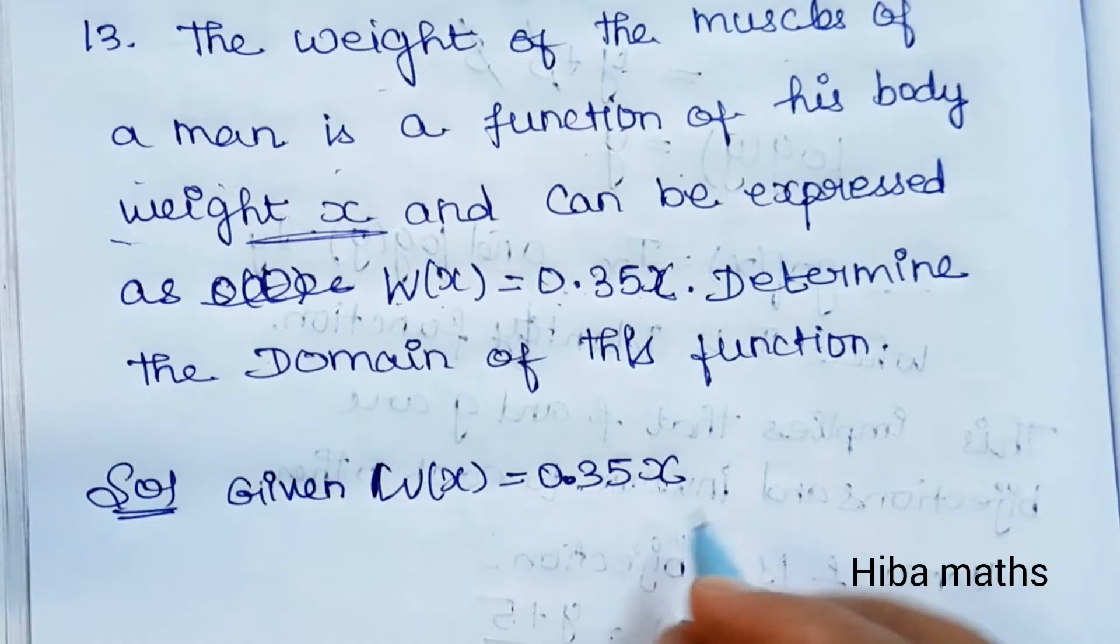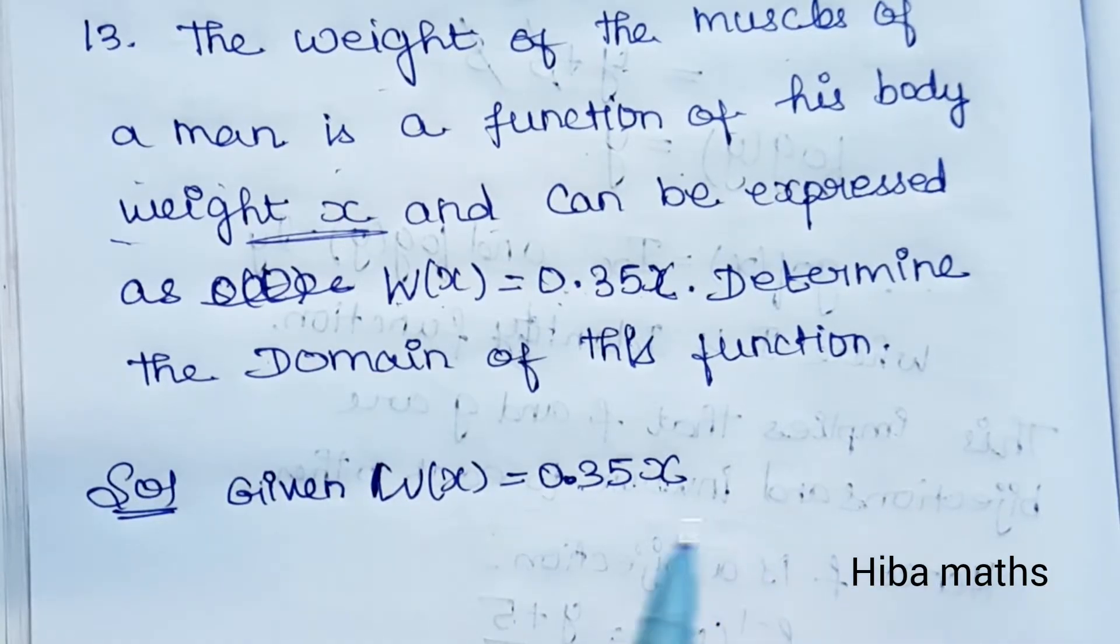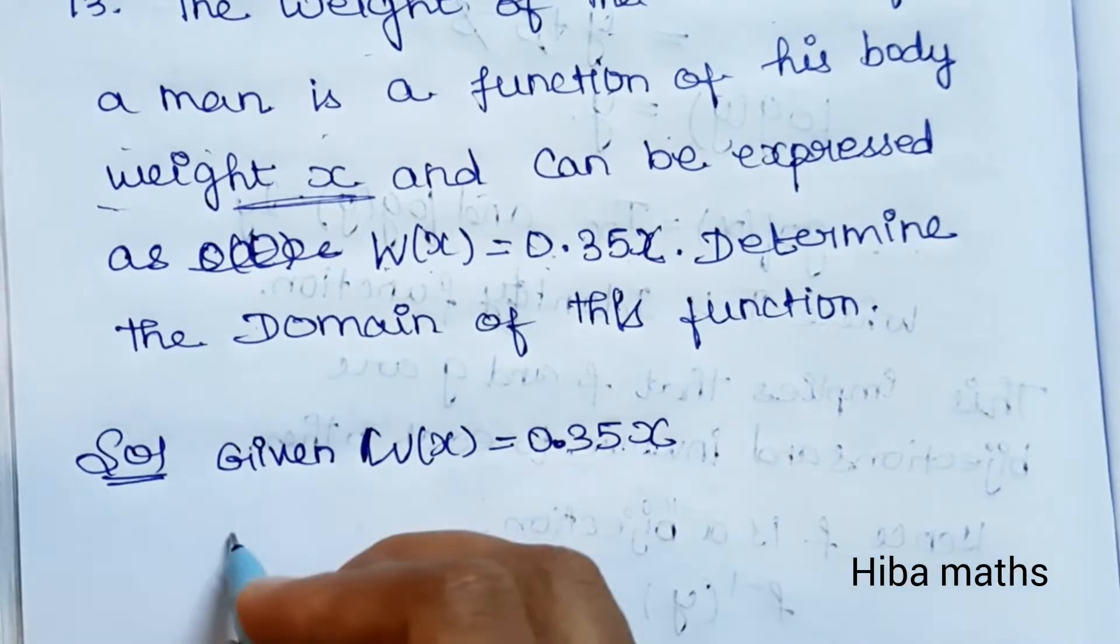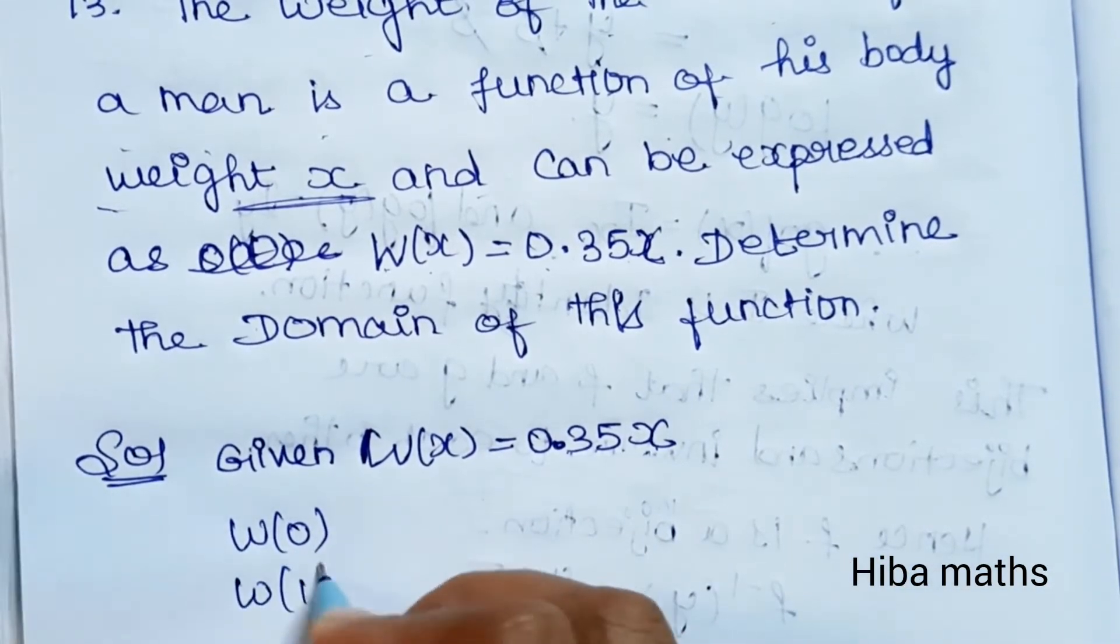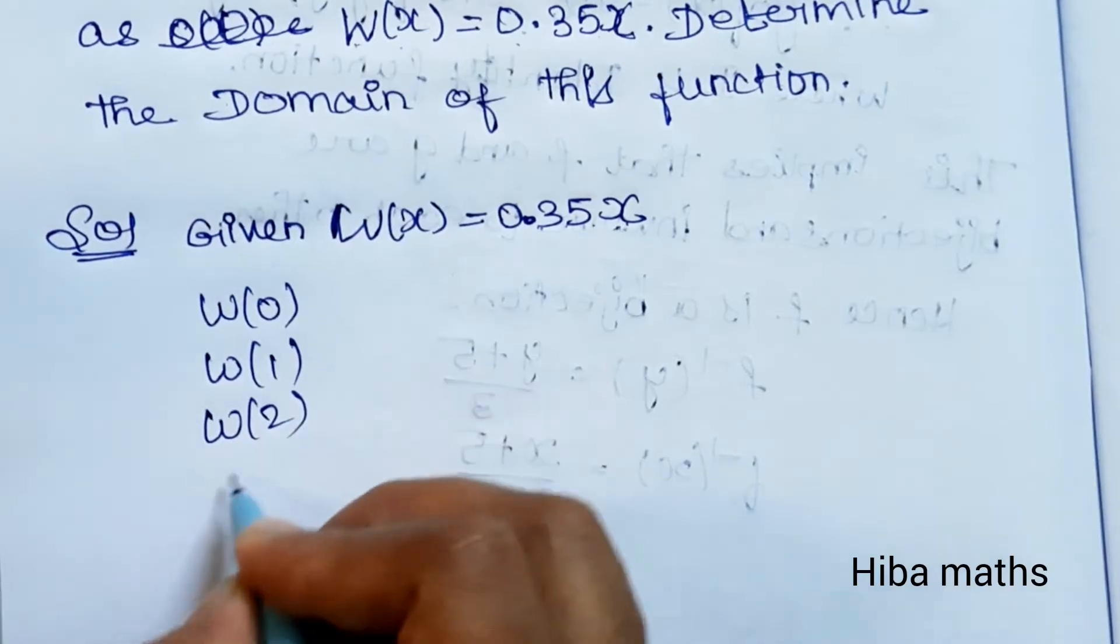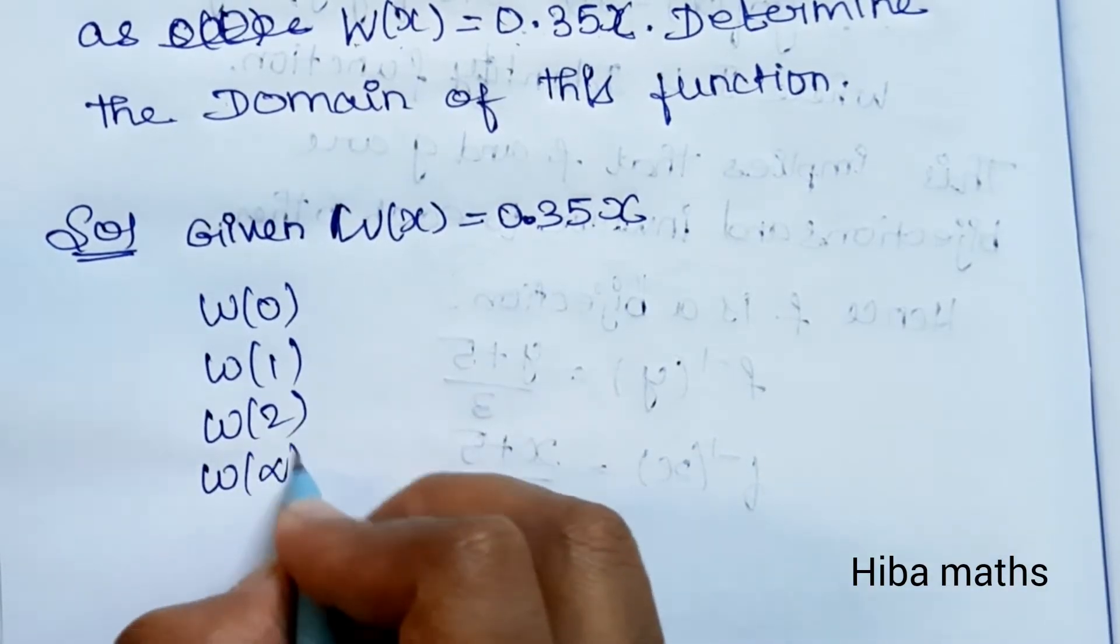If x is negative, the weight would be negative, which doesn't make sense. Let's check x = 0, x = 1, x = 2, and x approaching infinity.